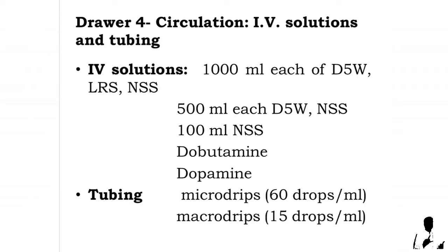Further drawer 3 contents include: tape, electrodes, BP cuff with stethoscope, assorted sterile gloves, packages of defibrillator pads, nasogastric tube, and 60mL syringes. Drawer 4 contains circulation IV solutions and tubing, including: 1000mL each of D5W, LRS, and NSS; 500mL each of D5W and NSS; 100mL NSS; dobutamine; and dopamine. Tubing includes micro drip sets at 60 drops per mL and 15 drops per mL.